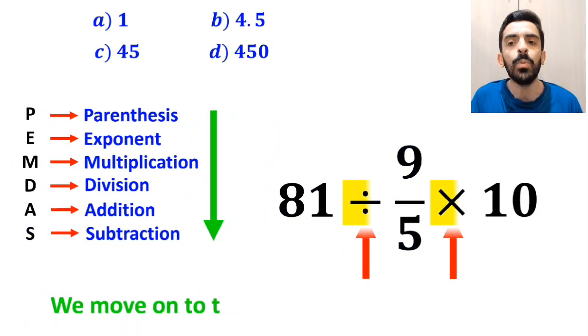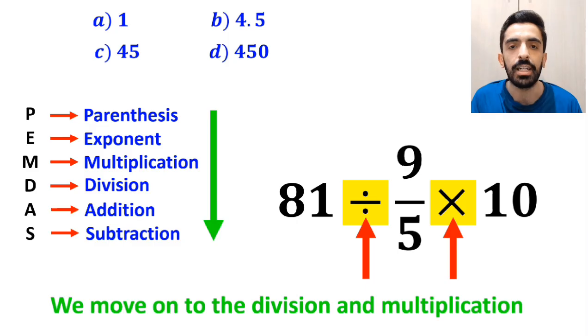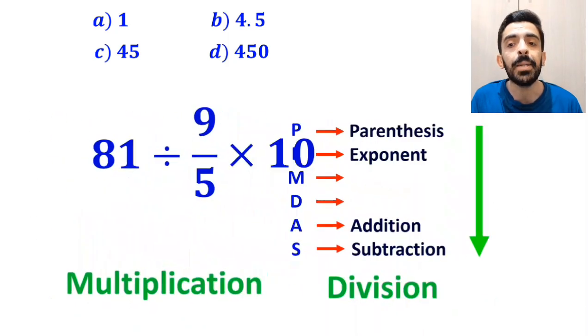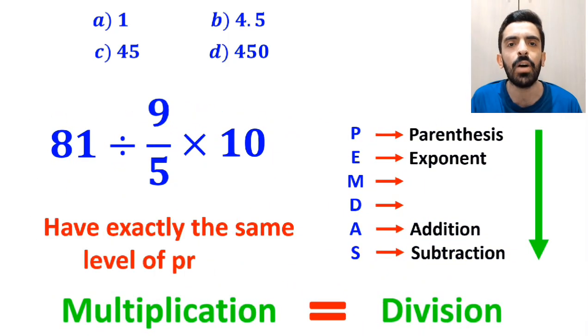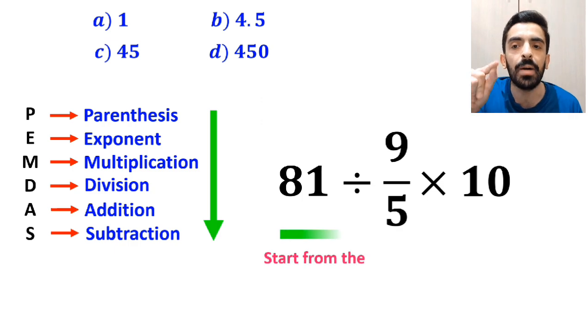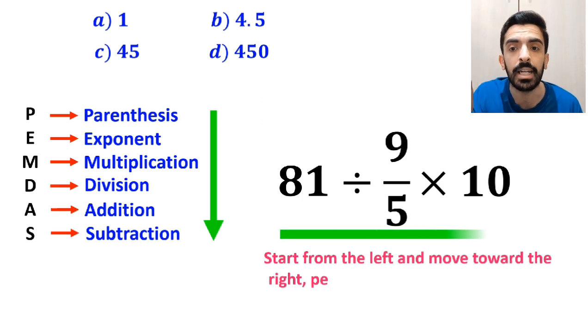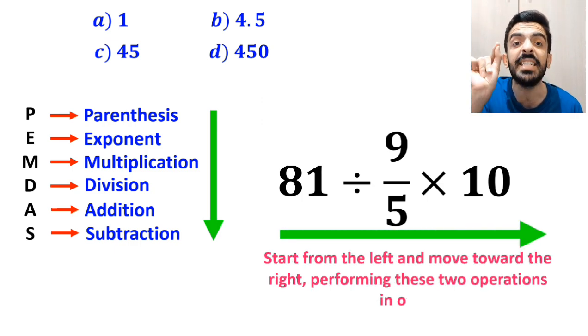In the next step, we need to move on to the division and multiplication. However, it's very important to note that multiplication and division have exactly the same level of priority in the PEMDAS rule. In this situation, the best approach is to start from the left and move toward the right, performing these two operations in order.